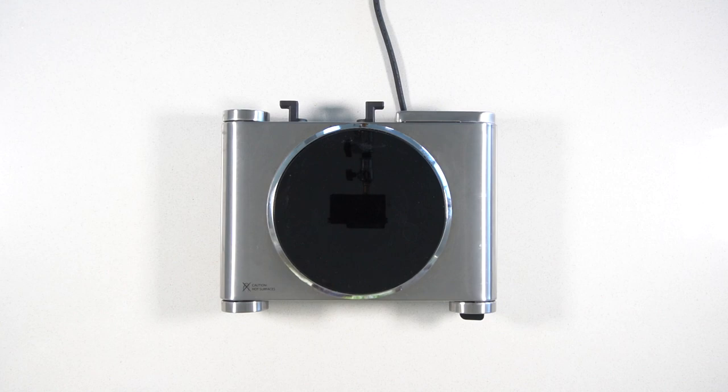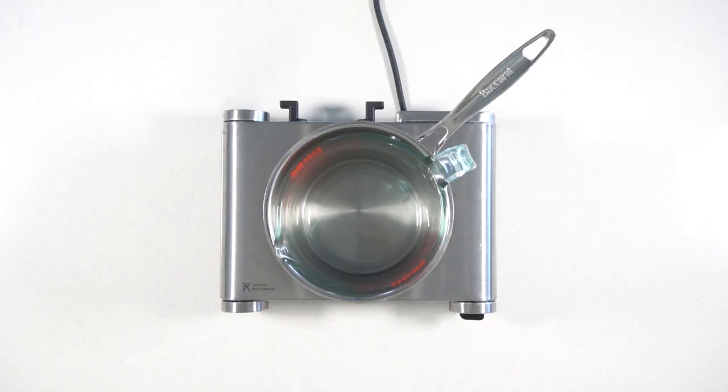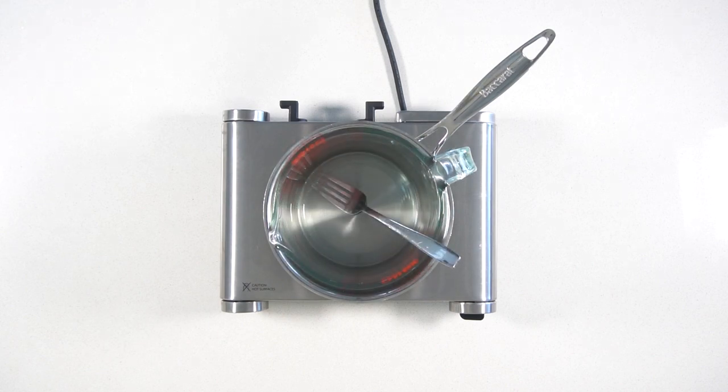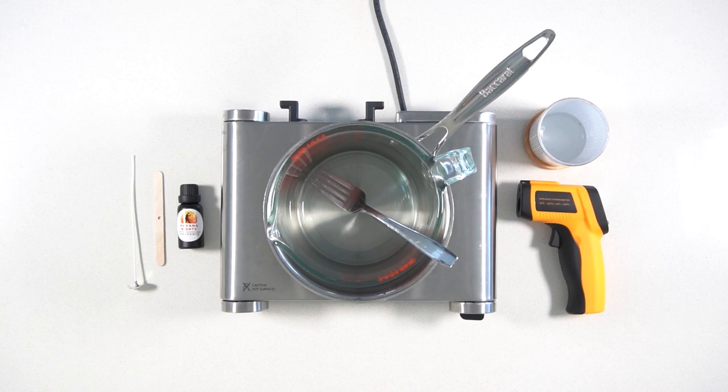We're going to look at the stovetop method. Today we're going to use a portable stovetop. You've got your pot there, you've got a pyrex jug, you're going to need something to stir the wax with, thermometer, and the ingredients. We're using the same ingredients for both methods just so we can compare the results.